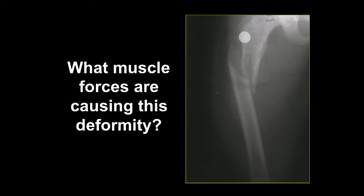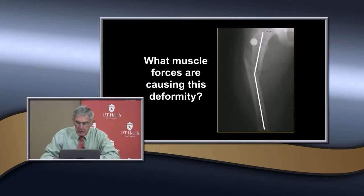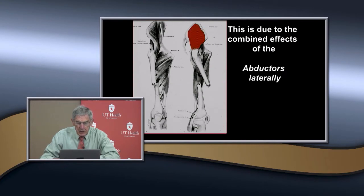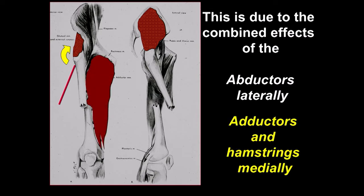Sometimes you'll see this pattern. The primary deforming force is the abductors, which laterally pull the proximal fragment into a somewhat varus position. The adductors are pulling on the distal fragment and that's what causes the angulation. You have to understand that because if you put the limb in large abduction, you'll stimulate the adductors and actually increase the angulation — that's the old standing adductor paradox.